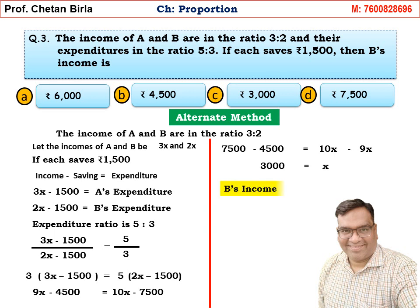Since x = 3000, B's income = 2x = 2 × 3000 = 6000 rupees. From here we confirm Option A is the correct answer. This sum has two methods — the option method and the algebraic method — use whichever you find easier.